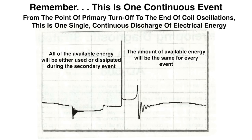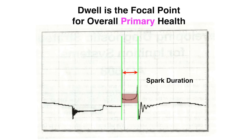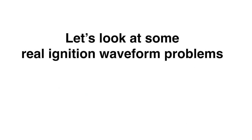What's the rule of thumb for a good or bad waveform? The spark line is the focal point for overall secondary health. Dwell is the focal point for overall primary health. Now let's look at some real ignition waveform problems.